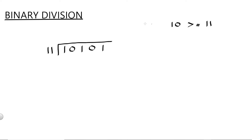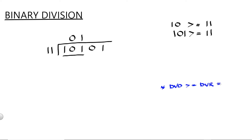The answer is no. So our answer here is 0. Then we get another digit, which is now 101. And we're going to compare if 101 is greater than or equal to 11. The answer is yes, so our answer is 1. We don't need to think how many times 101 can be divided by 11. Instead, we just put 1 here. If your dividend is greater than or equal to your divisor, then your answer is 1. If not, then your answer is 0. You only need to decide if it's going to be a 1 or 0.